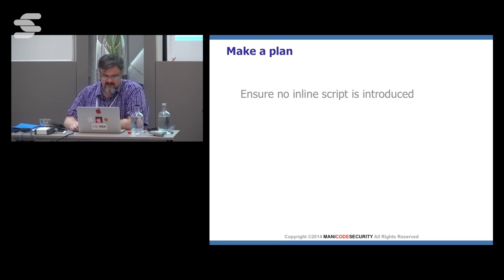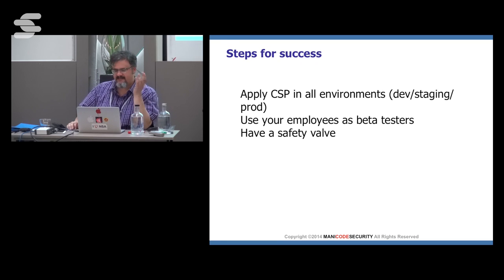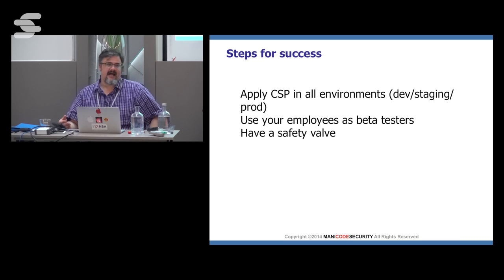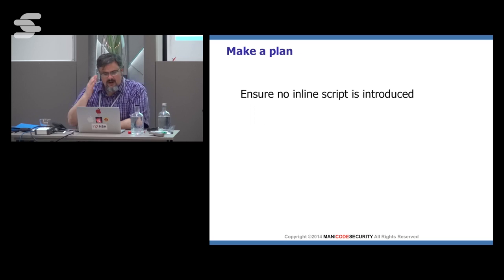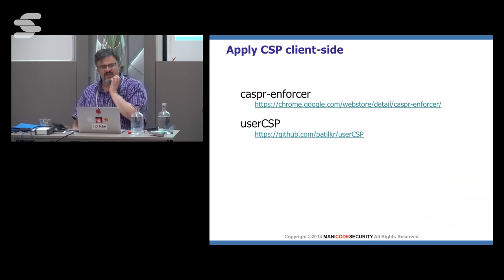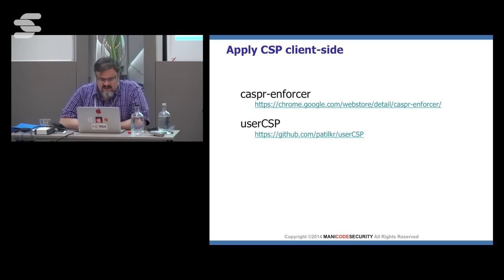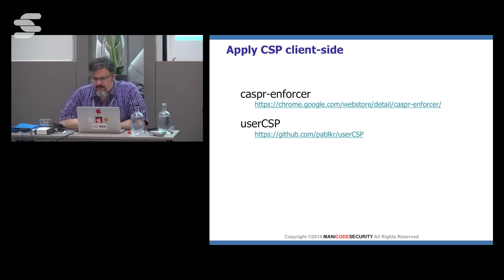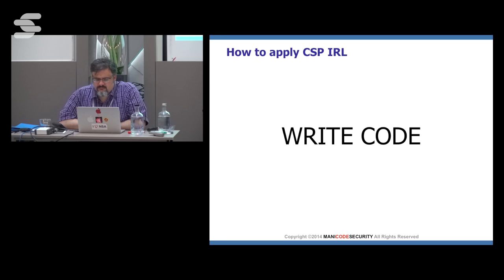We want to apply CSP in all environments — dev, staging, and prod. Use your co-employees as beta testers. Have a safety valve: when you first release CSP live, get ready to pull it back fast because things tend to break. It is a complex mechanism. We want to ensure no inline script is introduced, no new hosts are introduced. Set realistic expectations and goals — this is difficult to get right for a complex application. One of the first things I like to do is use some kind of client-side tool to test my policy. There are different browser plug-ins that will let me drop in a content security policy into the browser and apply it to the current page, letting me test to make sure my policy is working properly.